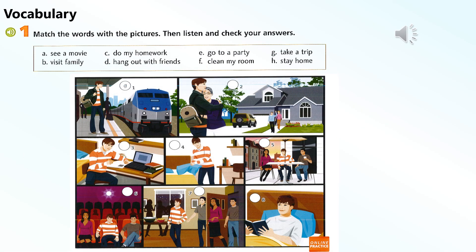Unit 12: What did you do? Page 76, Vocabulary. Match the words with the pictures, then listen and check your answers. One G: take a trip. Two B: visit family. Three C: do my homework. Four F: clean my room. Five D: hang out with friends. Six A: see a movie. Seven E: go to a party. Eight H: stay home.